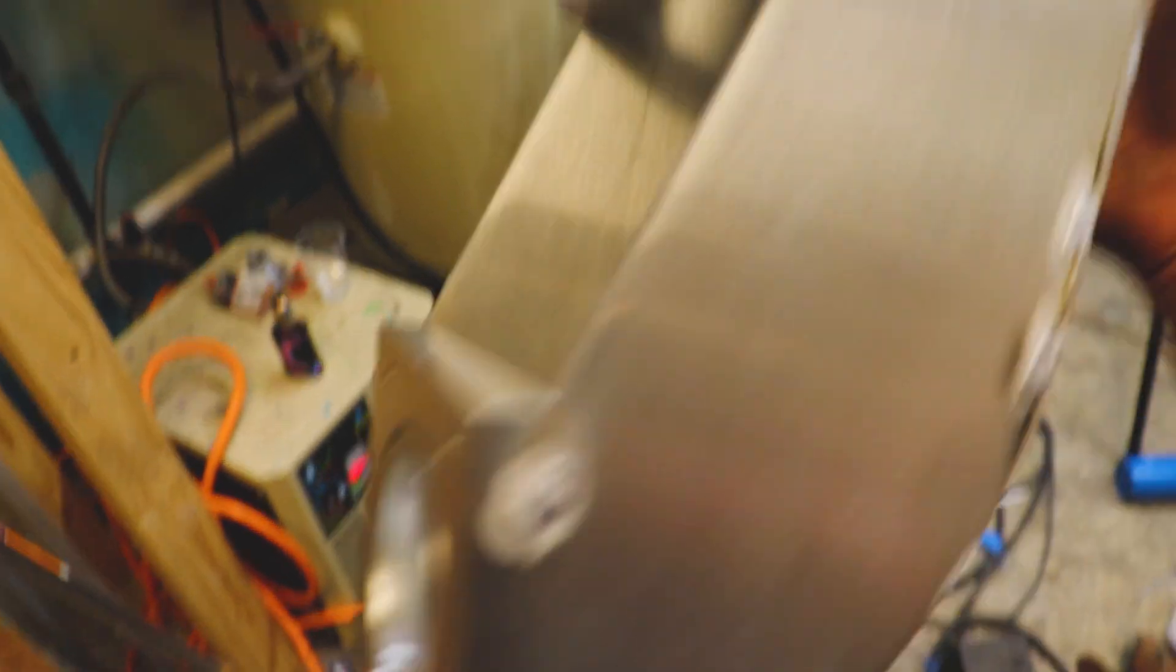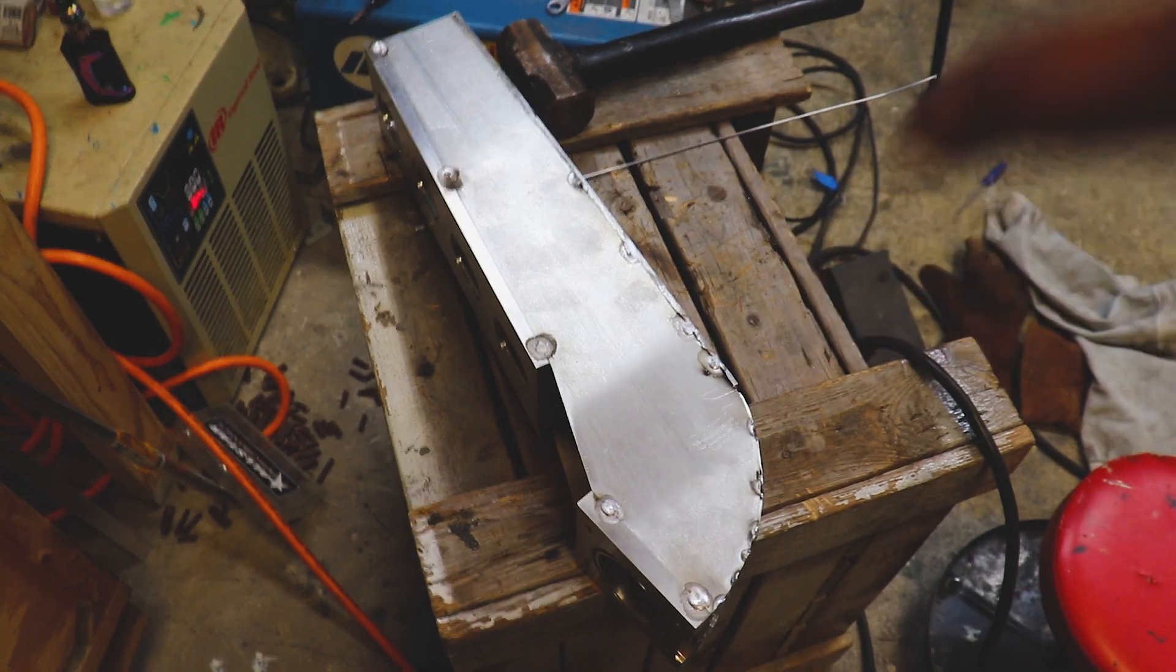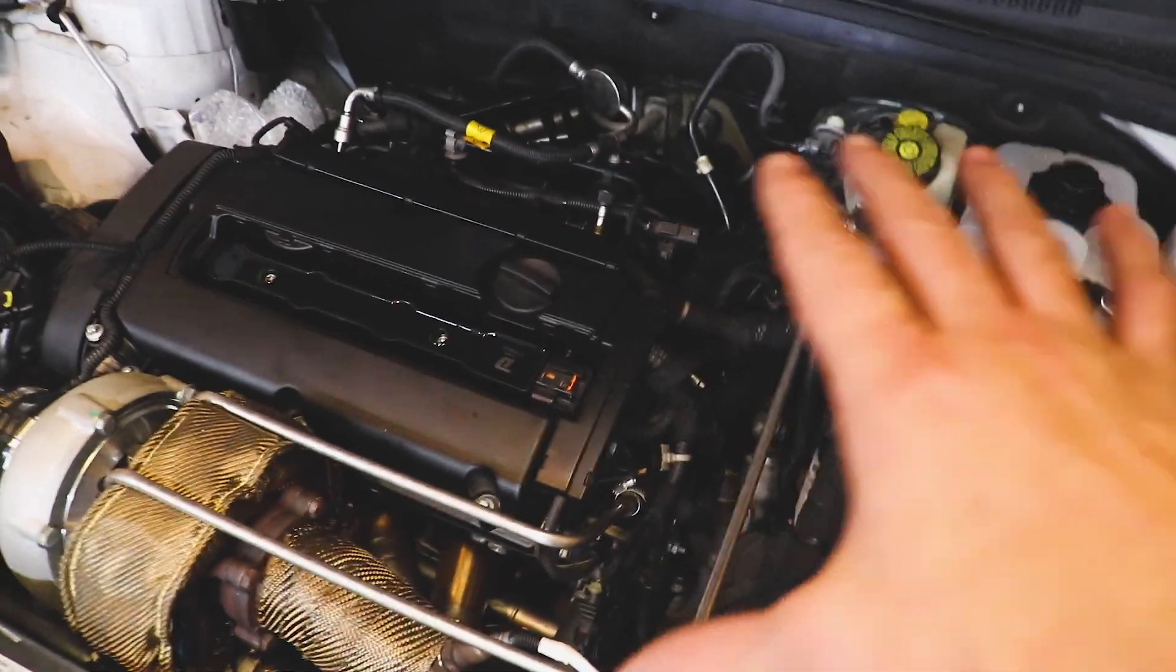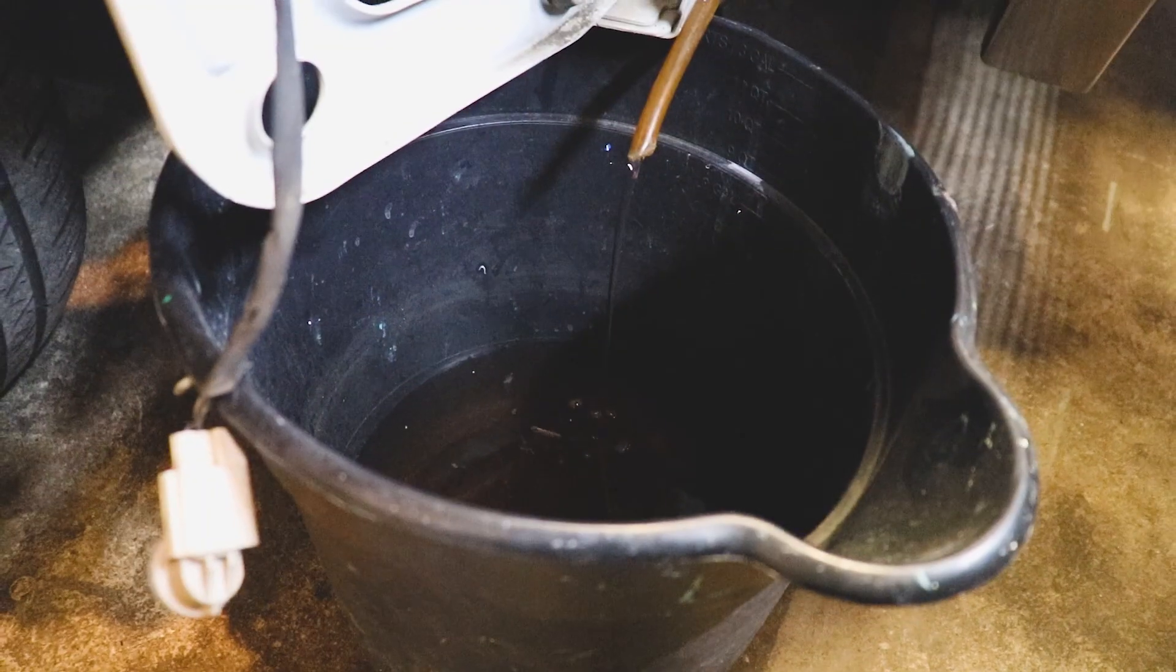We'll figure that out later but we need to make sure that this fits in place here and the throttle body is gonna clear just fine. So we need to get that intake off. I've got the radiator draining, we're getting all that water out and we'll get this intake manifold off and we'll start mocking up the rest of it.